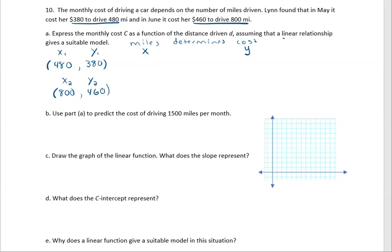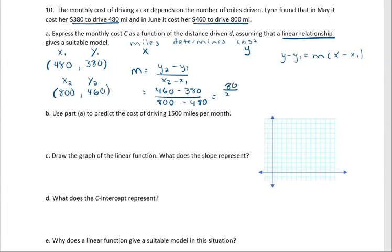We're trying to find a linear relationship, so that tells us that we're going to need our Y minus Y1 equals M times X minus X1 point-slope form. Before we can substitute in, we have our Y1 and X1, but we don't have our slope. So let's find the slope. Slope is Y2 minus Y1 over X2 minus X1. Substituting everything in, Y2 is 460, Y1 is 380, X2 is 800, and X1 is 480. If we simplify this down, it looks like we get 80 over 320, which will give us, you can cancel your zeros here, so a slope of one fourth.